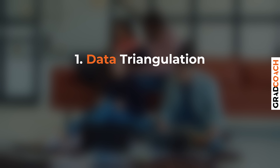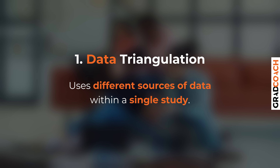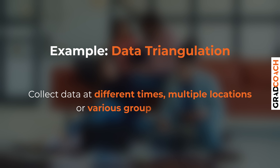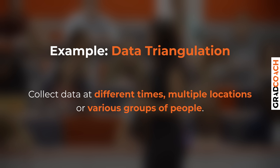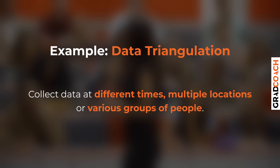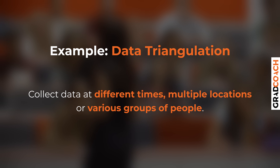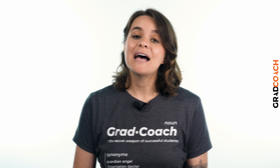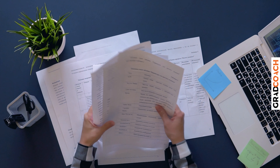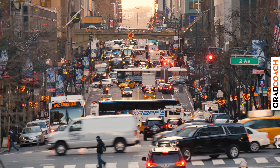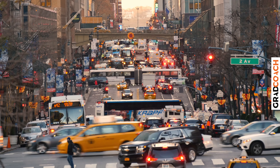First up is data triangulation. As the name suggests, this approach involves using different sources of data within one study. For example, if you were researching people's opinions about a political event, you might collect data at different times, from different places, or from different groups of people. Naturally, by using multiple data sources, you'd gather a more holistic perspective that spans both space and time.